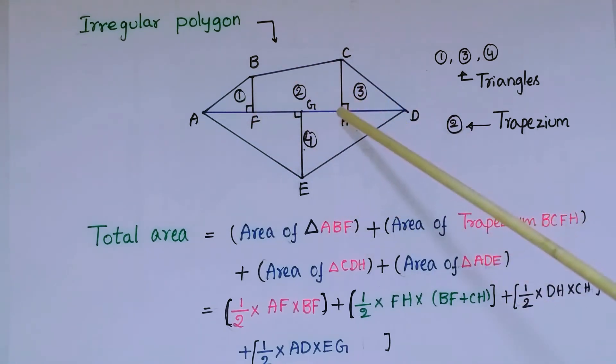Then this triangle area is 1/2 times CH times HD, and again this triangle area is 1/2 times AD times GE. Once you add all these areas, then we will get area of ABCDE.